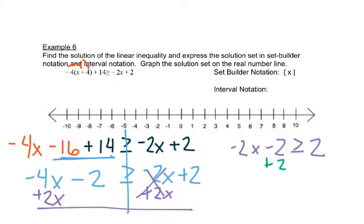And then we would add 2 to both sides. So we have a negative 2x is greater than or equal to 4. And then divide both sides by negative 2. And change that middle sign, so we get x is less than or equal to negative 2.